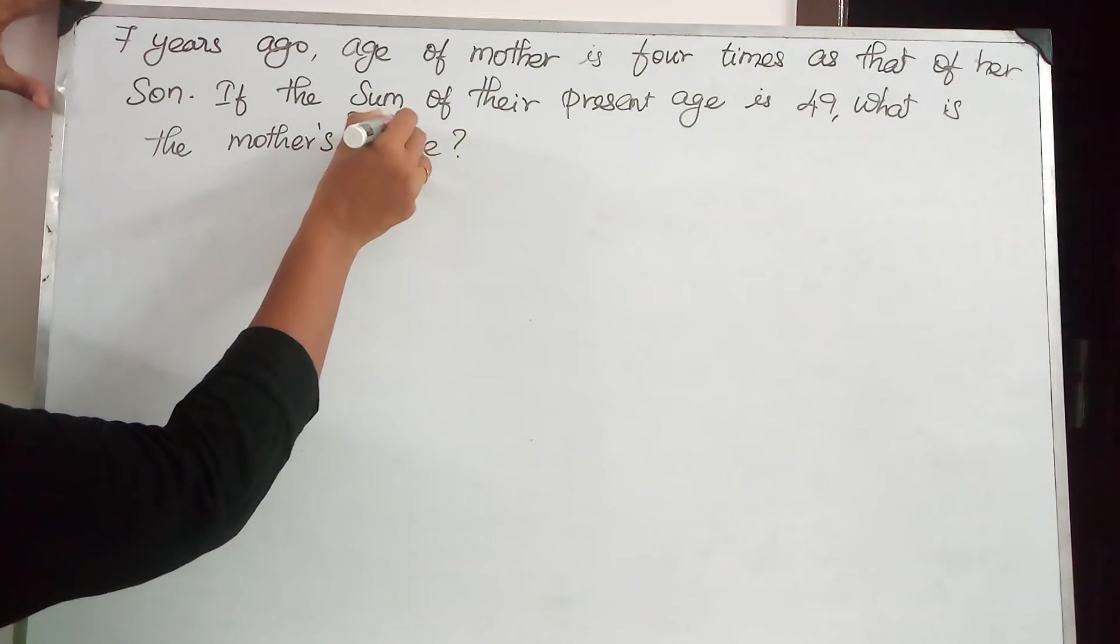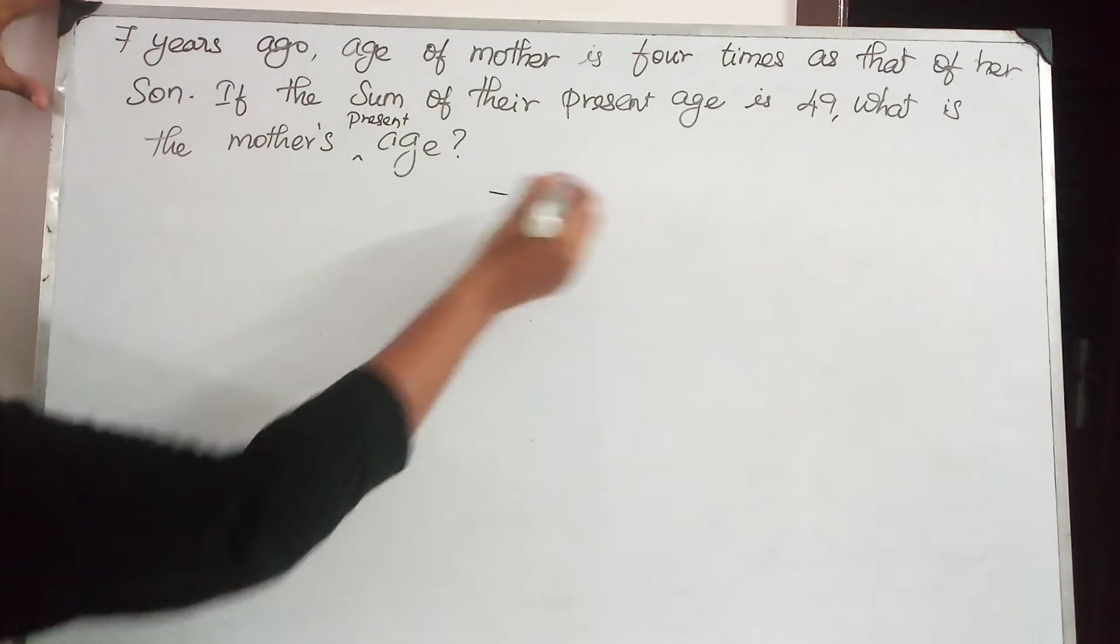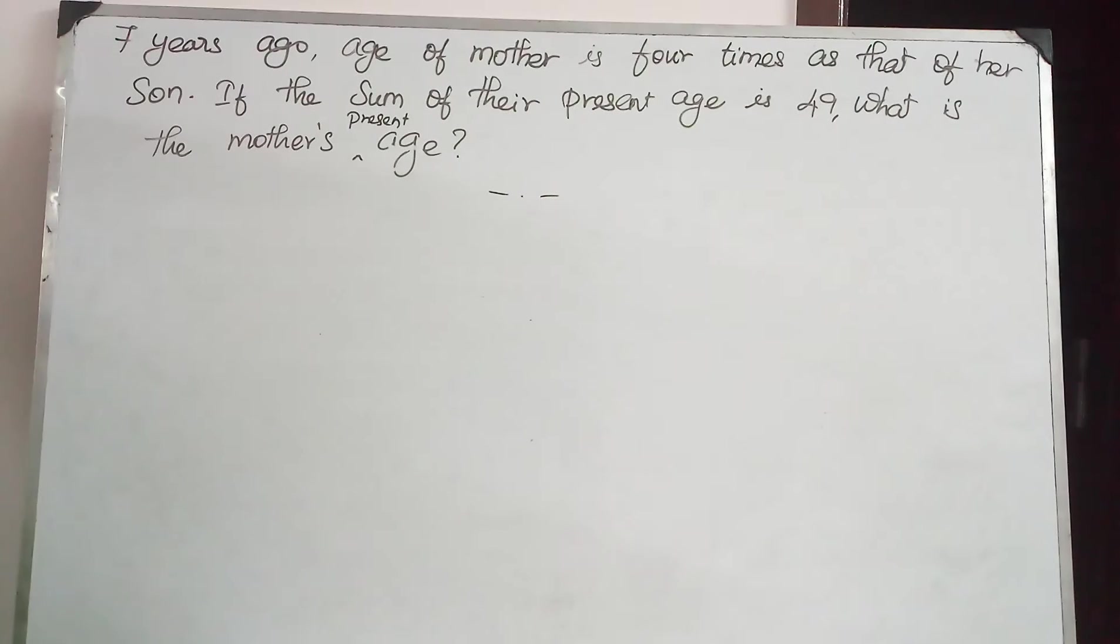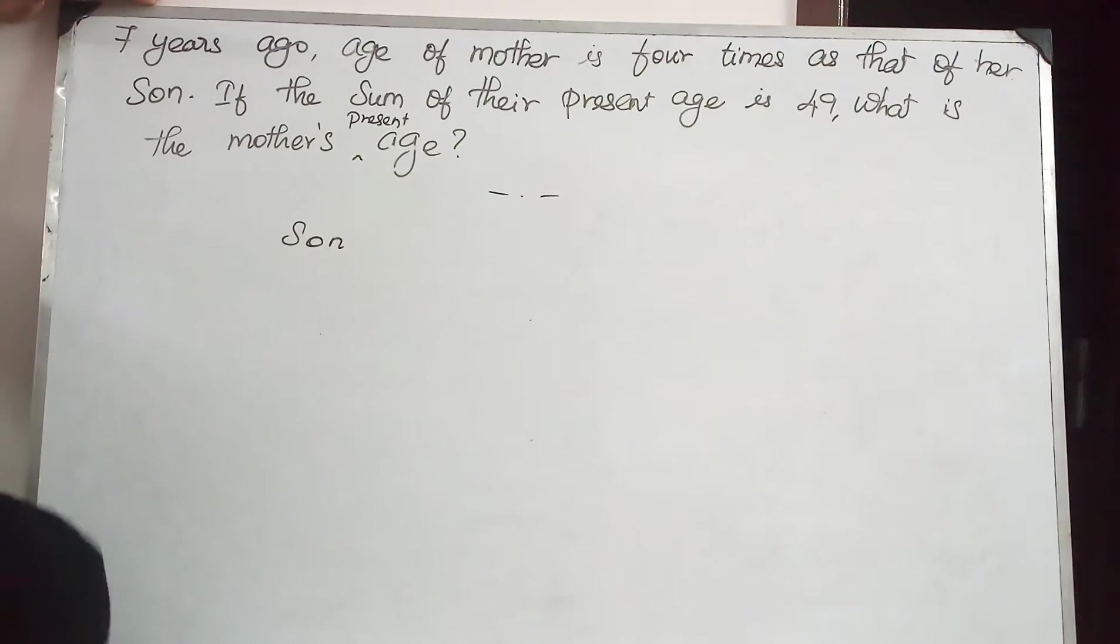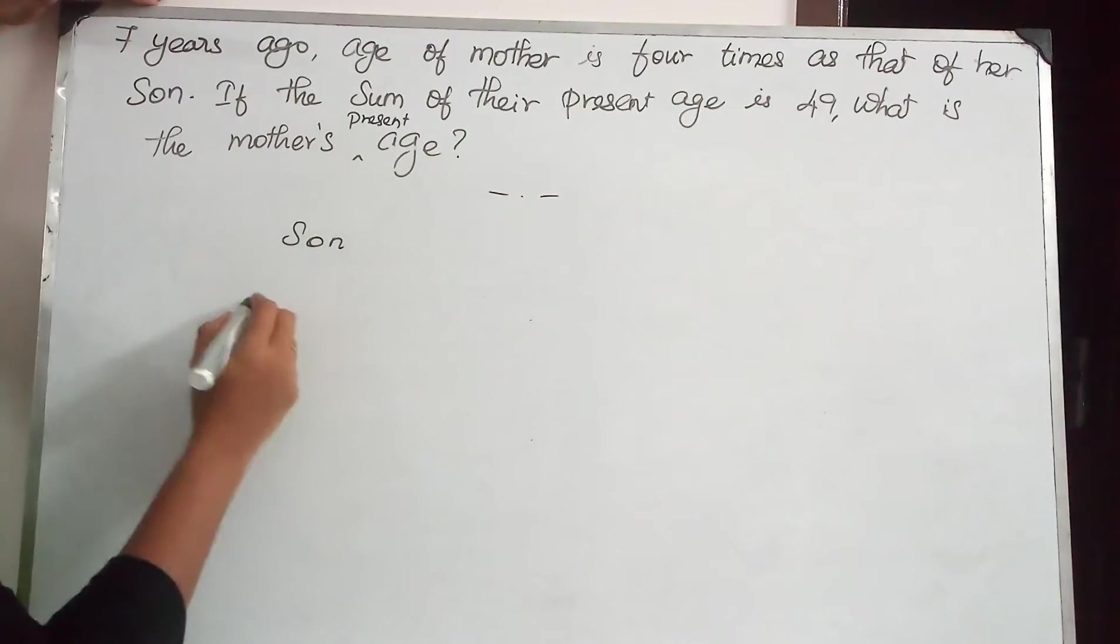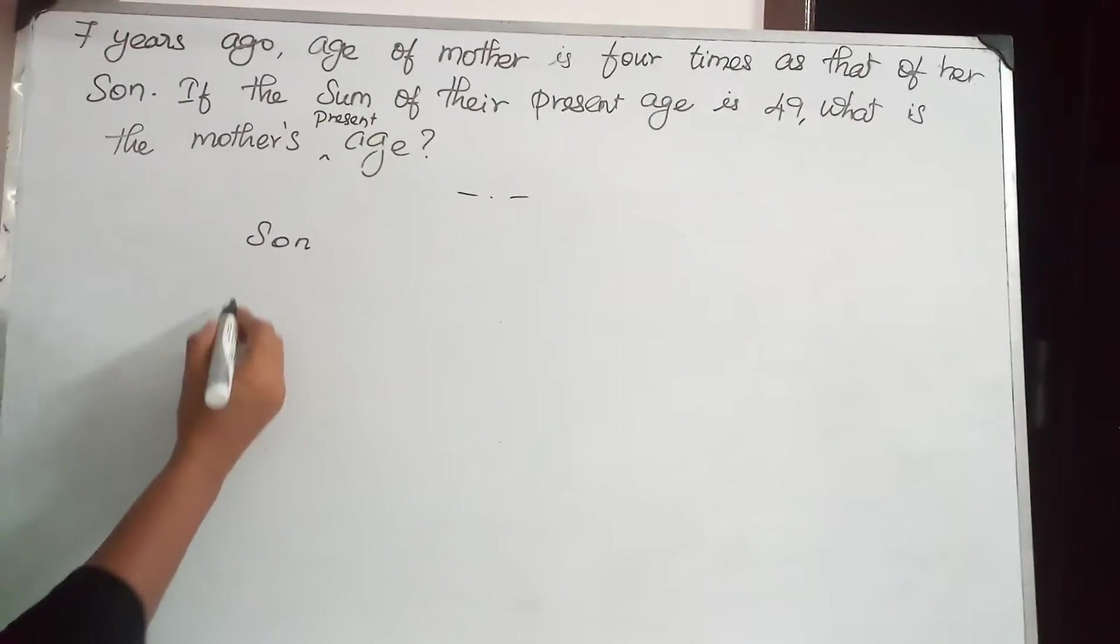In this case instead of giving ratio, a different concept is given. Let us see how to solve it. As always, the age of son will be lesser. Let us assume the age of the son as S.